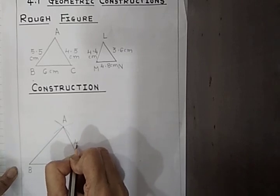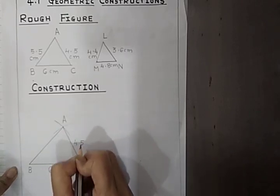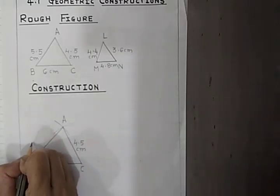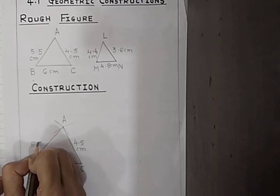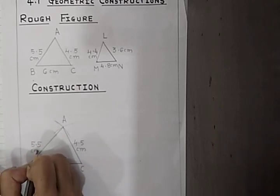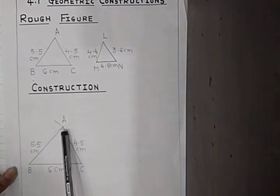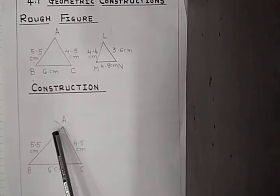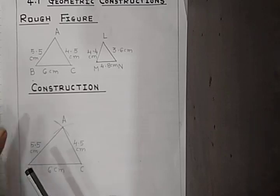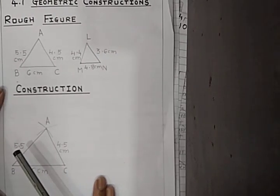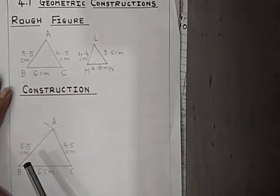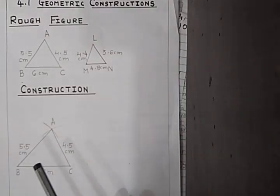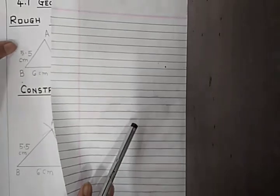In this way, we have constructed triangle ABC. Remember, you should not rub the arc signs — you have to keep them as they are. Now, after constructing triangle ABC, we will construct triangle LMN.